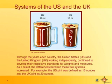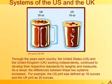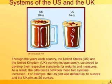The US and the United Kingdom continued to work independently, developing their own standards for weights and measures, which led to differences between the two systems. For example, the US pint is 16 ounces and the UK pint is 20 ounces. So if you ask for a pint of beer in the United Kingdom, you will get four ounces more than if you ask for a pint in the United States.